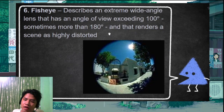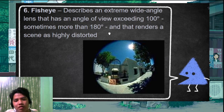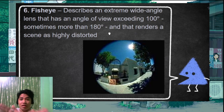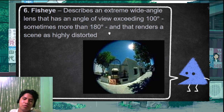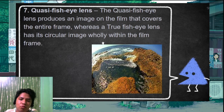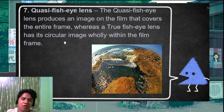The fish eye lens has an angle of view exceeding 100 degrees, sometimes more than 180. Everything is captured but the center is distorted in a circular shape. The quasi fish eye lens produces an image that covers the entire film frame, whereas a true fisheye lens produces a circular image within the film frame.